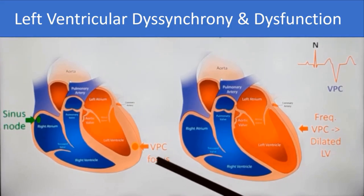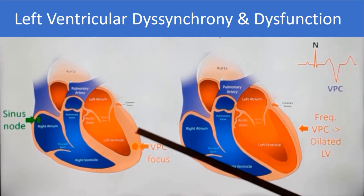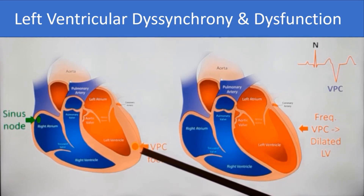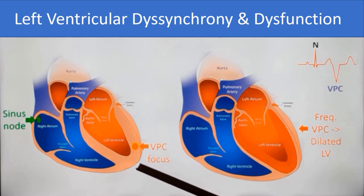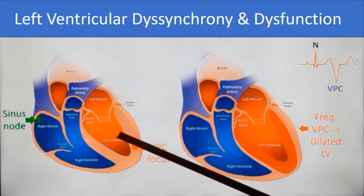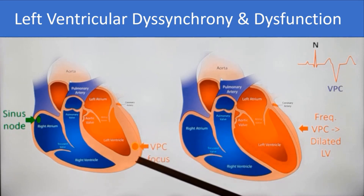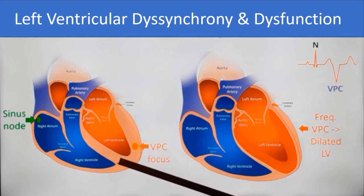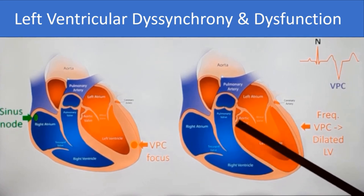In ventricular ectopics, the sequence of activation is different. Instead of arising from the sinus node and coming down the conduction system into the ventricles, the focus originates from the ventricle and spreads along the myocardium into all parts. The QRS is wide and the activation sequence is abnormal, so synchrony is lost. Normally the lateral wall and septum contract together, but in a ventricular ectopic one region contracts first while the other is not yet contracting — causing left ventricular dyssynchrony.